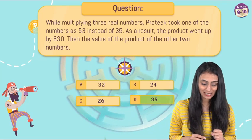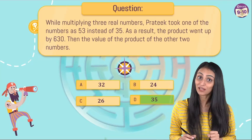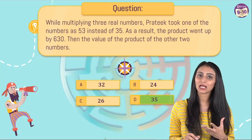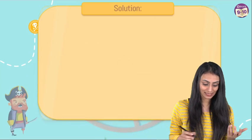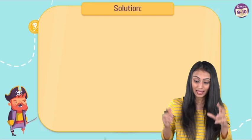All right, let me tell you what the right answer is. So the right answer for this question is 35, which is option D. Now let's quickly take a look at the solution, how we arrived at this answer.